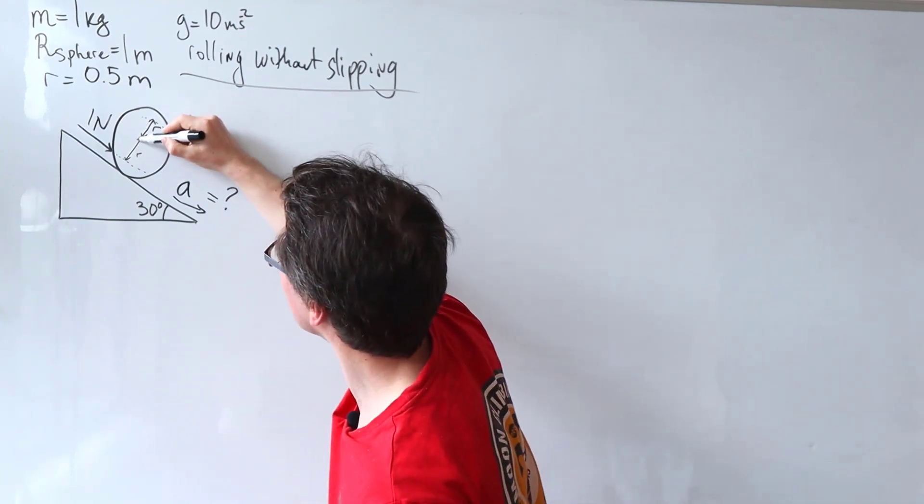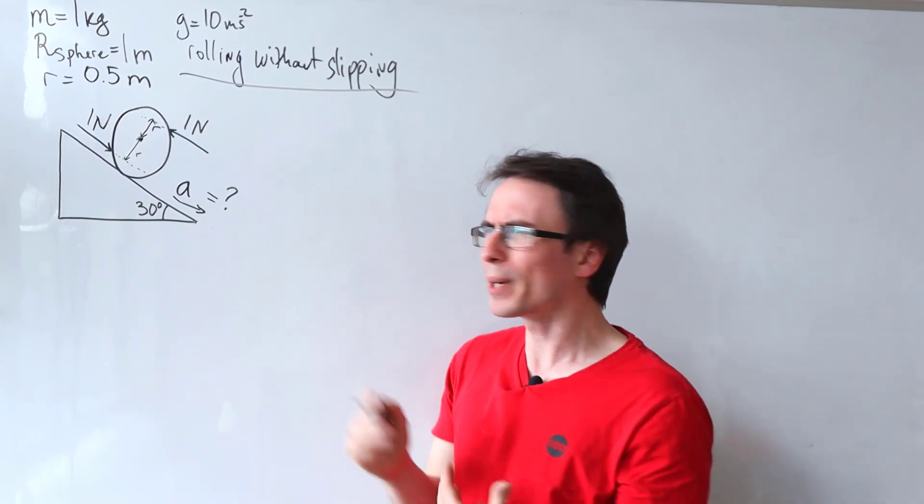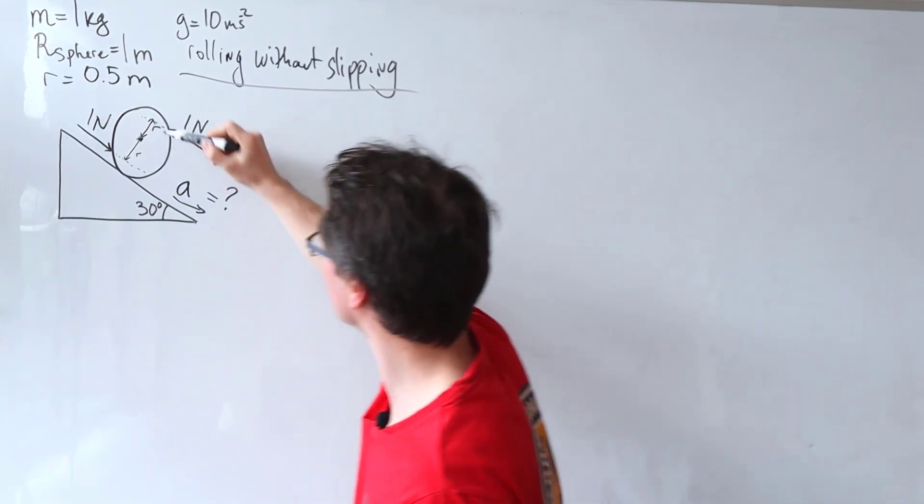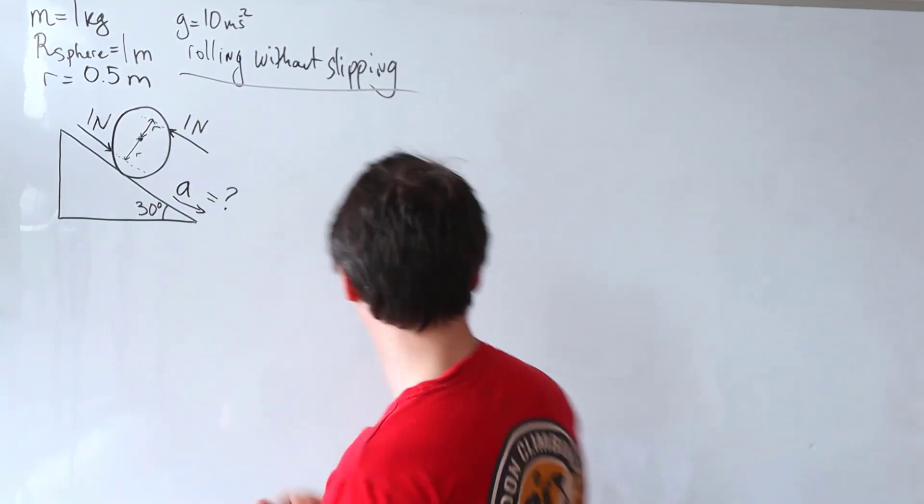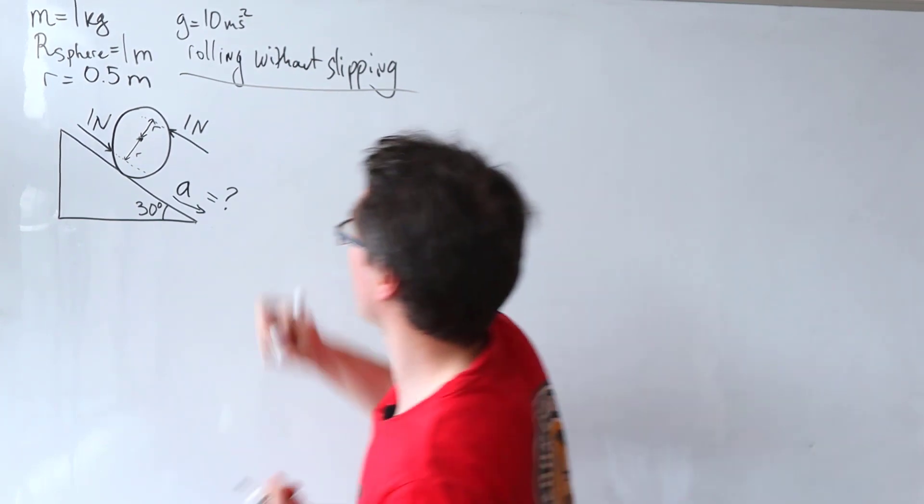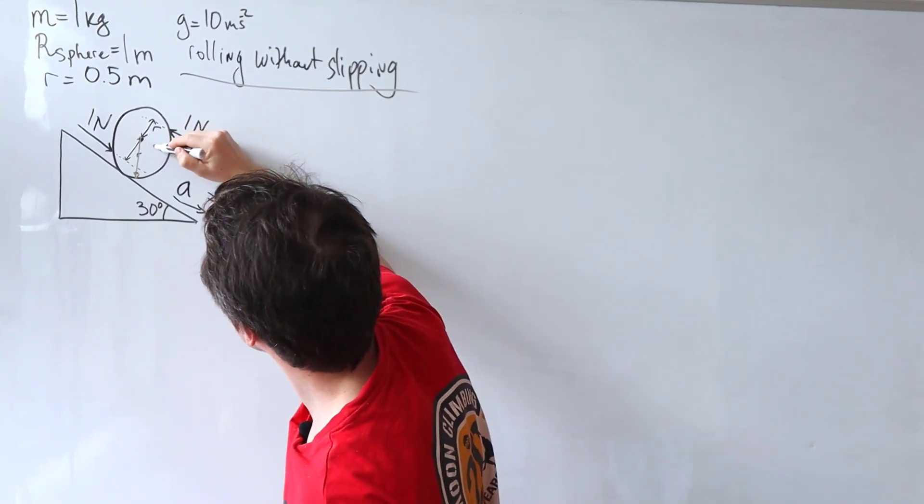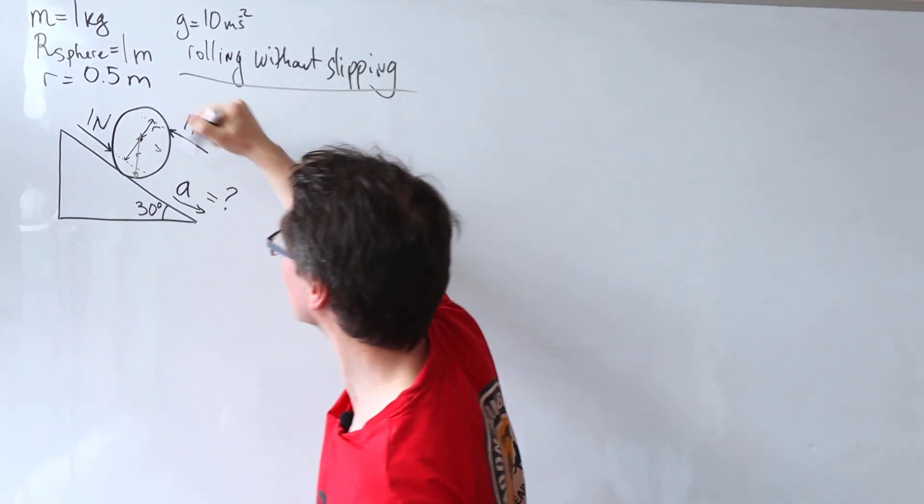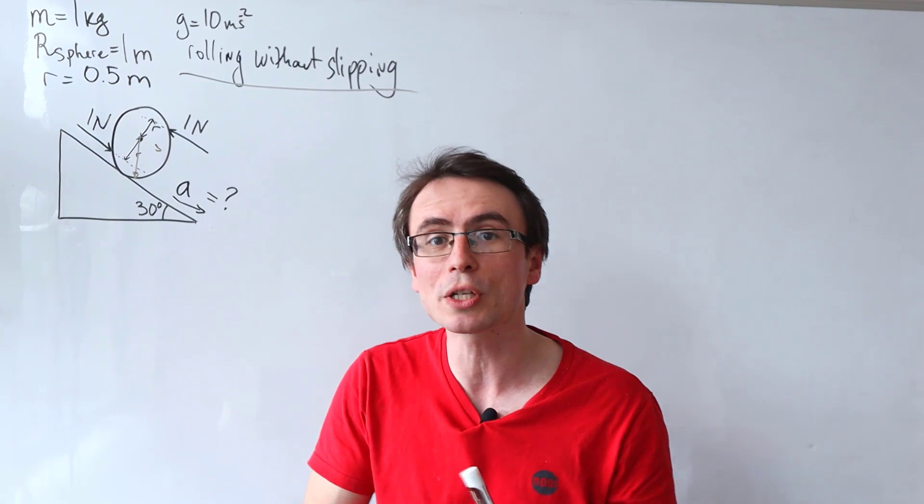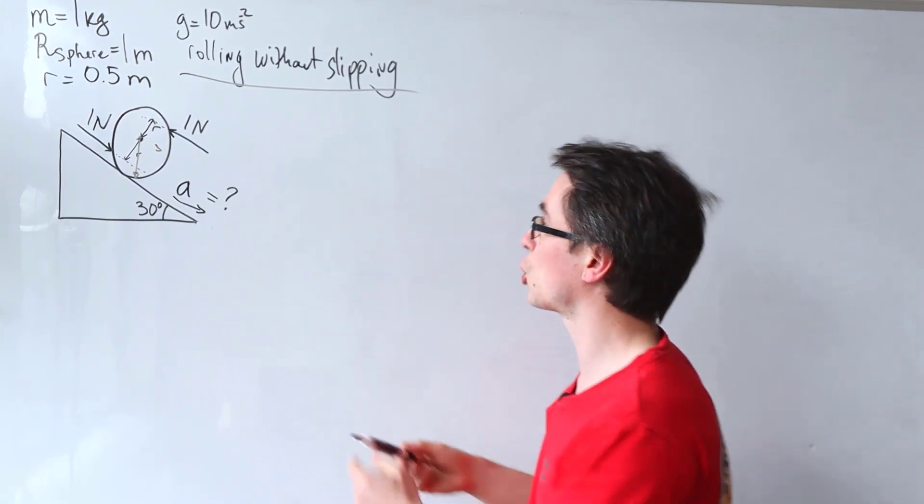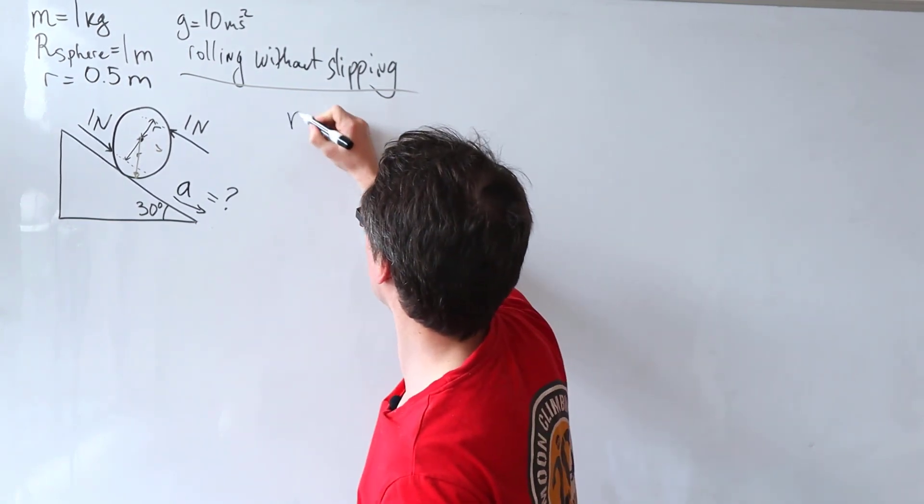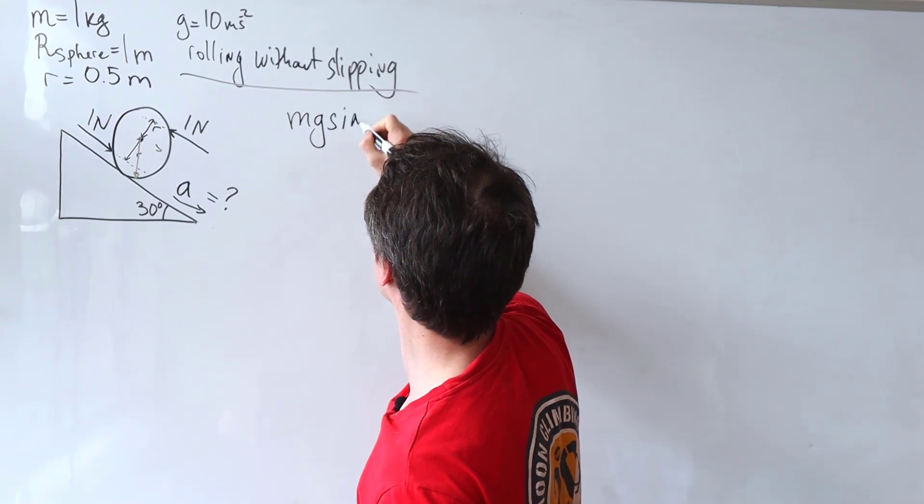What forces will be acting on this center? We're going to have a component of gravity, which is kind of like acting along. So gravity is acting down here. And this can be represented by a component along the plane, which will just be given by mg sine theta.